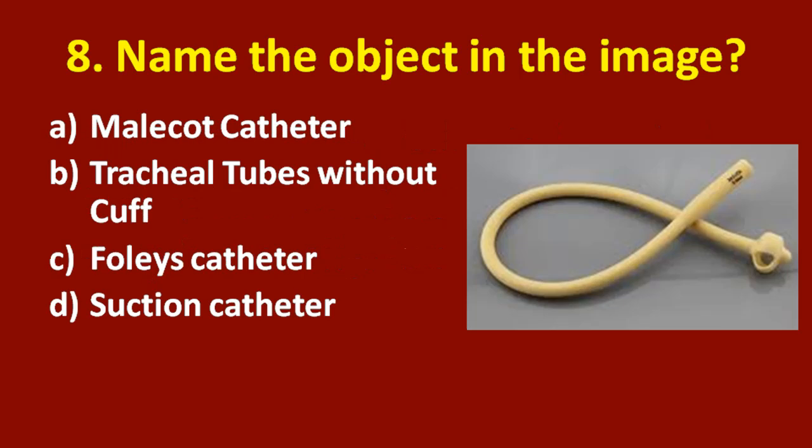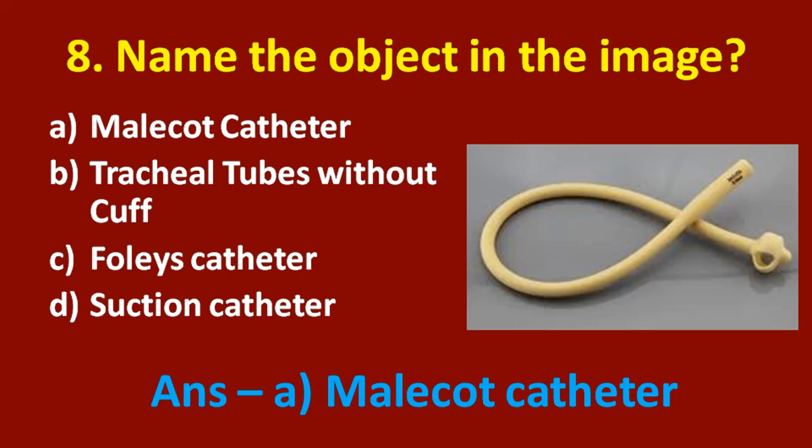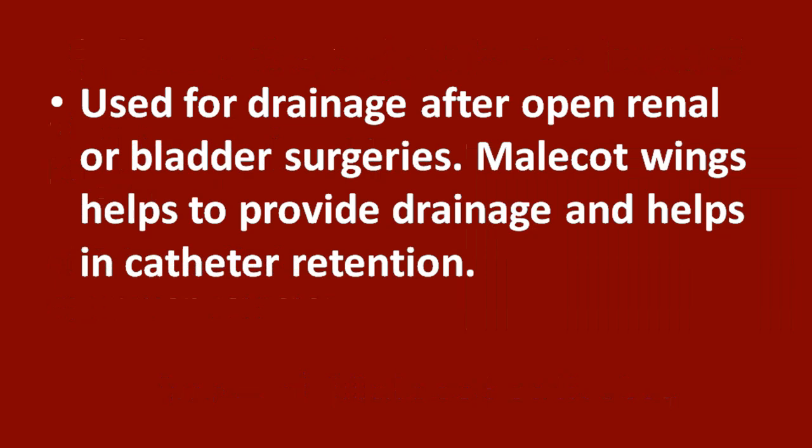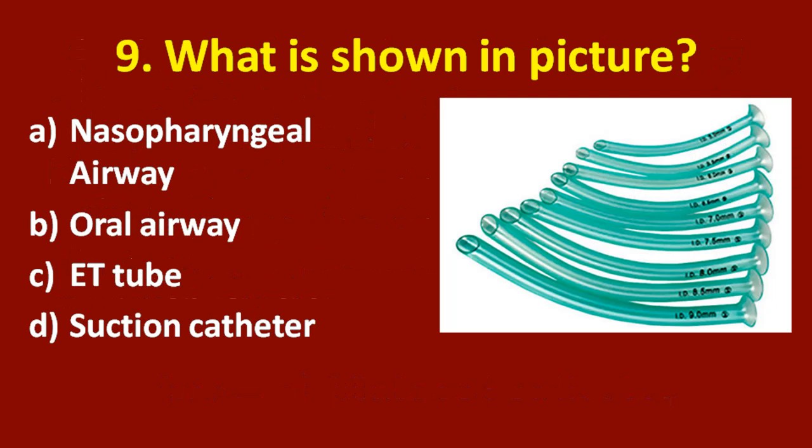Eighth question: name the object in the image. Option A: Malecot catheter. Option B: tracheal tubes without cuff. Option C: Foley catheter. Option D: suction catheter. The correct answer is option A, Malecot catheter. It is used for drainage after open renal or bladder surgeries. The Malecot wings help to provide drainage and assist in catheter retention.